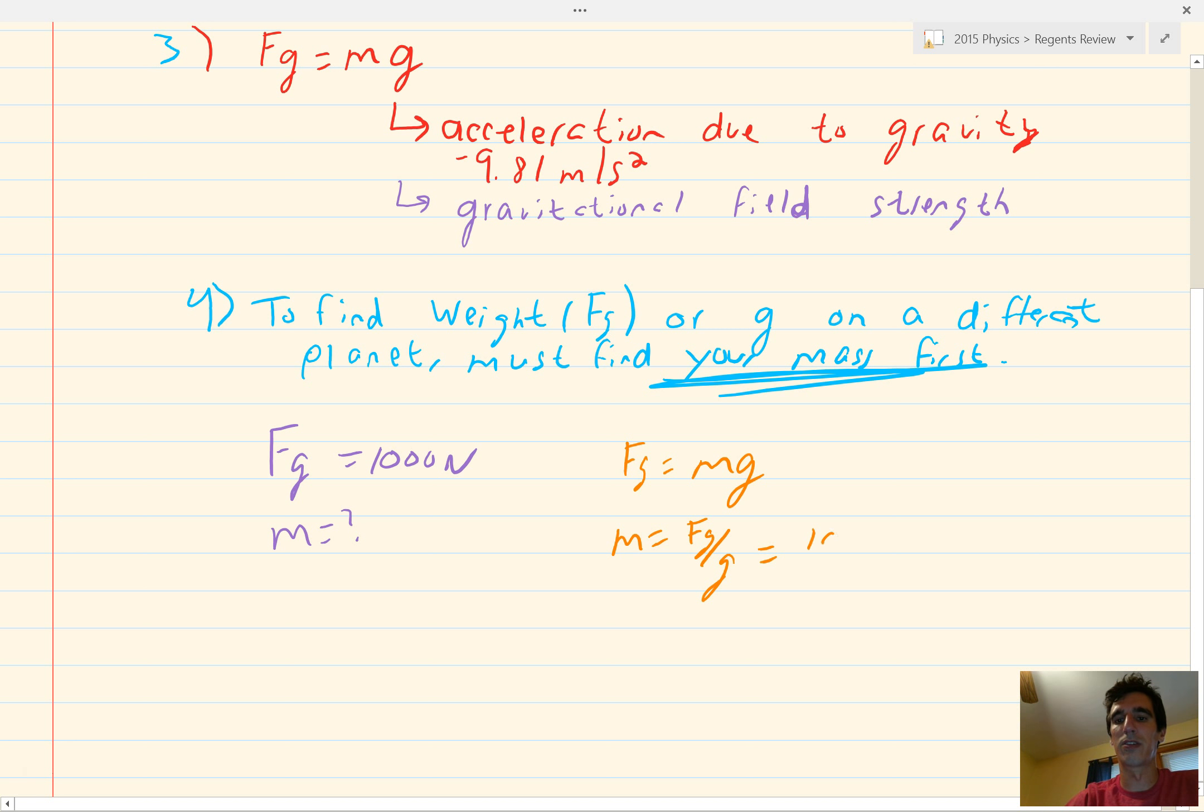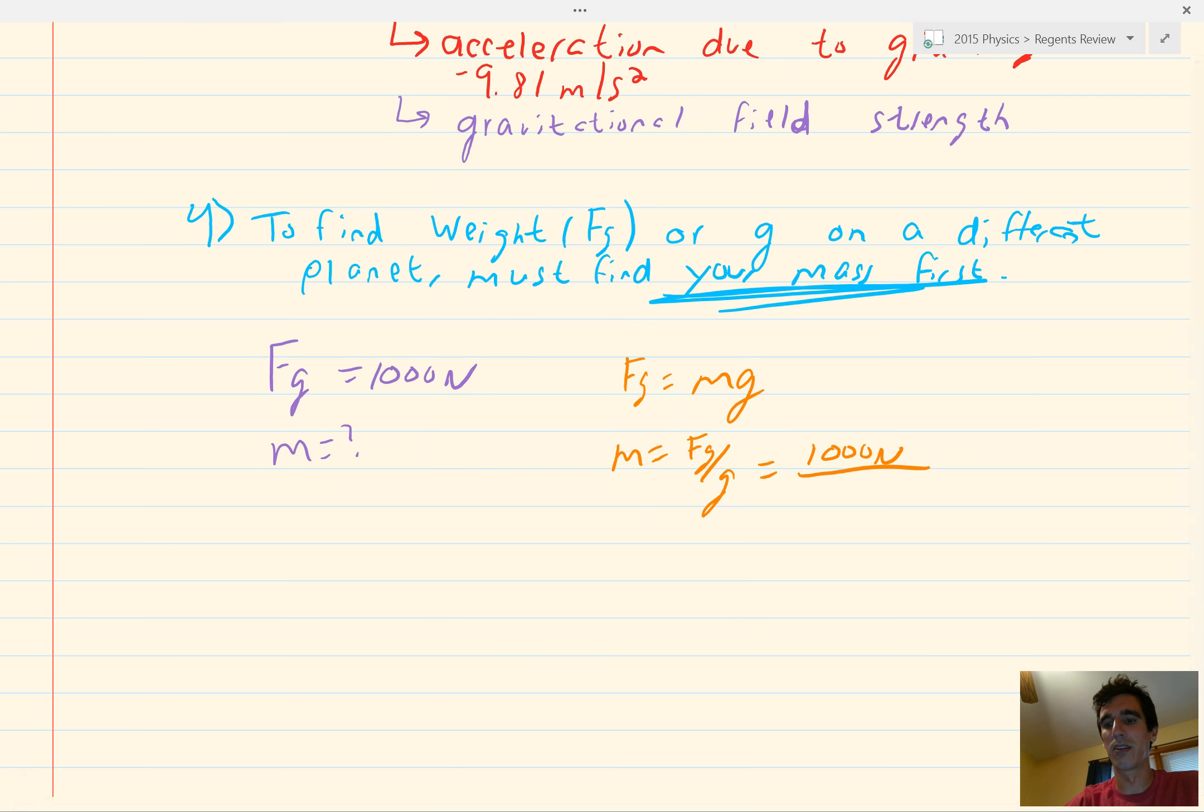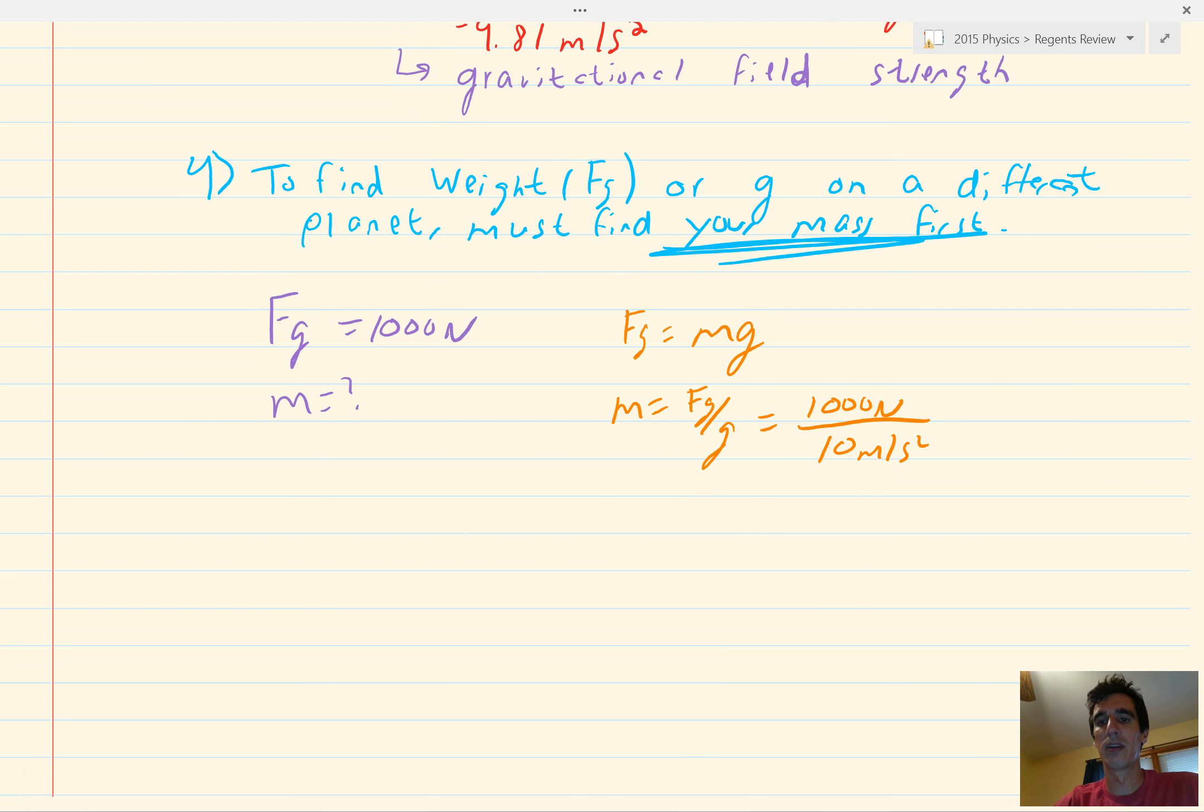Plug in chug. 1,000 newtons. We're going to round g up to negative 10 meters per second squared. We're keeping it positive, because really we're finding our normal force. And, 1,000 divided by 10 is 100 kilograms.